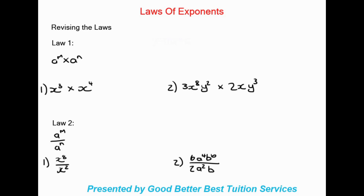Law number one of exponents: when we have the same base and we are multiplying the same base, the exponents above will be added together. So basically we'd write that as a to the power of m plus n — we're keeping that base and adding the exponents.